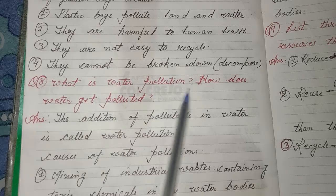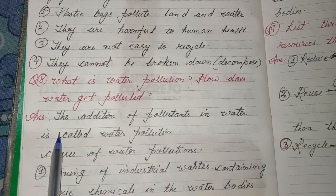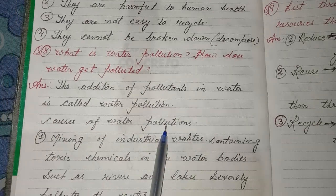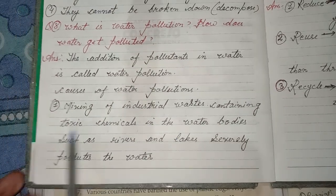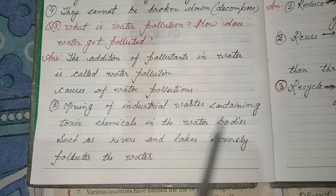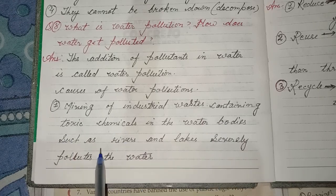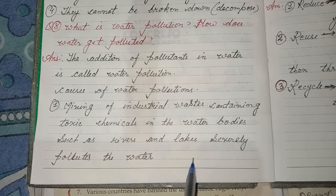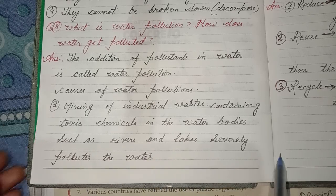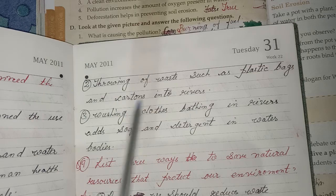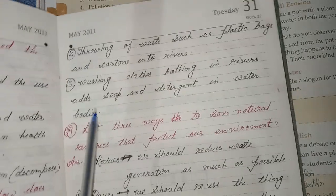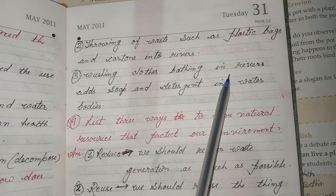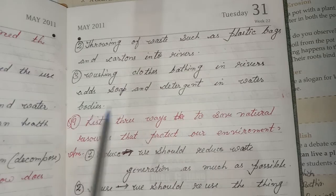Eighth, what is water pollution? How does water get polluted? Answer: The addition of pollutants in water is called water pollution. Causes: mixing of industrial waste containing toxic chemicals in water bodies such as rivers and lakes severely pollutes the water; throwing of waste such as plastic bags and cartons into rivers; washing clothes and bathing in rivers adds soap and detergent into water bodies.